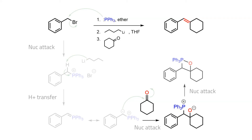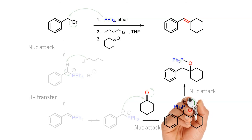Since oxygen and phosphorus have a strong affinity for each other — the P-O single bond is worth about 90 kcal per mole — they combine to give a cyclic oxaphosphetane that is highly strained.